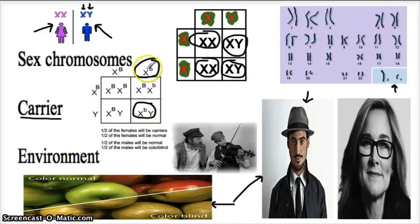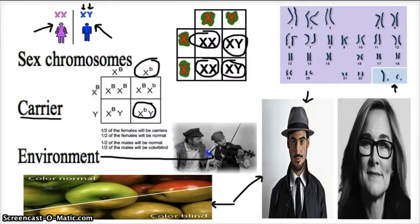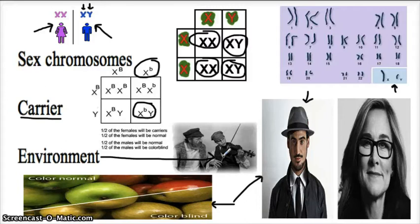It's not all about genes — environment also plays a role in human characteristics. For example, someone practicing the fiddle can get better with practice, coupled with their genetic disposition for coordination. Diet influences height: if somebody has a poor diet all their life, the chances of them growing as tall as they could are not very good. Practice also influences muscle coordination. Hopefully you've learned a little bit more about genetics.